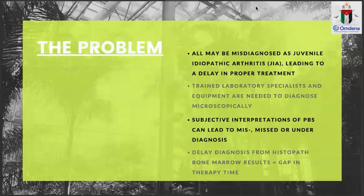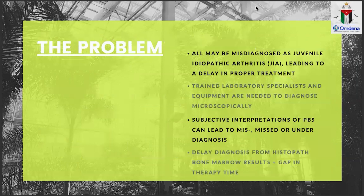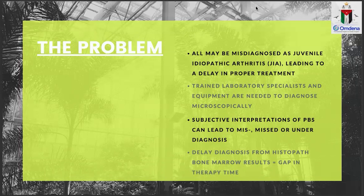The problem statement can be summarized as follows: ALL is often misdiagnosed because of its symptoms, including bone pain and recurrent sickness, which leads to a delay in proper treatment. Another issue is that trained lab specialists and highly evolved technology are needed to make the diagnosis accurately using microscopic and technological features. This also leads to subjective interpretation, where the pathologist reading the slide may or may not recognize features relevant to a benign or malignant diagnosis, resulting in non-ideal accuracy.